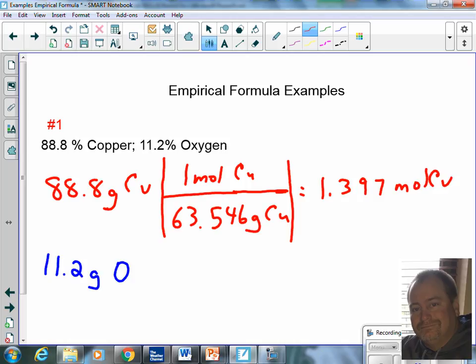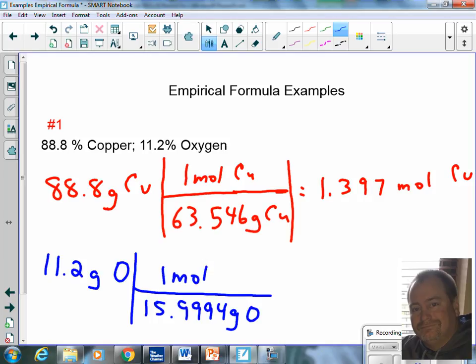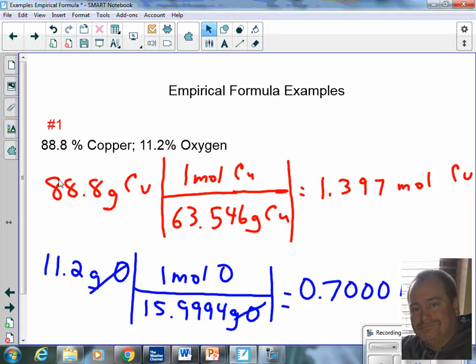I'm going to do the same thing for oxygen. I know that 15.9994 grams of oxygen is one mole of oxygen. Grams cancel. When I do my math, it comes out to 0.7000 moles of oxygen.